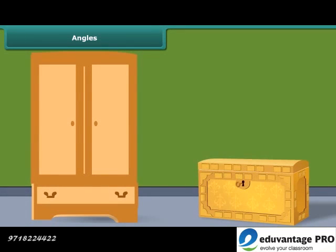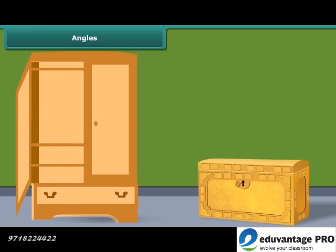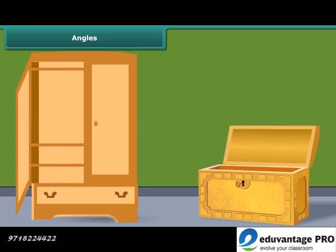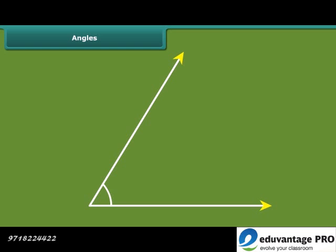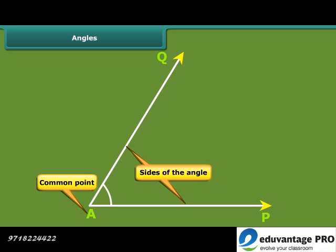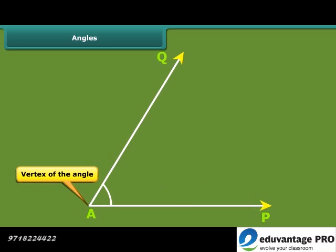The open door of an almirah or a box forms an angle. In the language of mathematics, when two rays start from a common point, we say that an angle is formed. In the given angle, ray AP and ray AQ have a common point A. The two rays forming an angle are called the arms or sides of the angle, and the common end point is the vertex of the angle. The angle is named as angle PAQ. Note that the vertex specifying the angle is written as the middle letter.